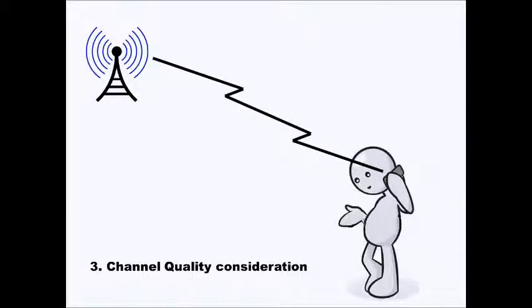The third is channel quality consideration. Here we are trying to show that the quality of the signal reaching the mobile phone can vary. If the quality of the signal is good and continuous, there is no need for handoff. But if the quality is not good — meaning there is discontinuity in the signal due to obstacles between the user and antenna, poor radiating quality of the antenna, or faulty antennas — then there is a need to transition the signal from one cell to another.